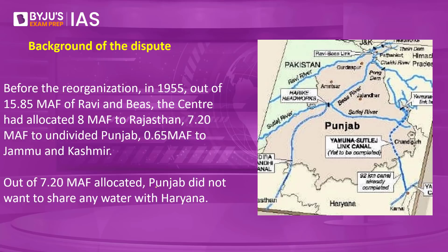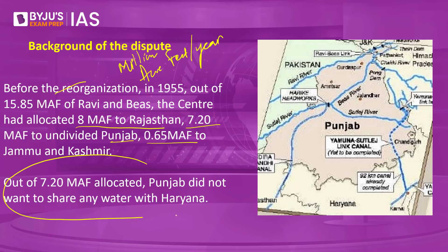Before the 1966 reorganization, the Ravi and Beas together had 15 MAF (million acre feet per year) of water. Of this, 8 MAF was allocated to Rajasthan, 7.2 MAF to Punjab, and 0.65 MAF to Jammu and Kashmir. Punjab has made it very clear that it is not willing to share any portion of its 7.2 MAF allocation with Haryana.